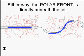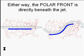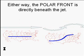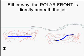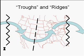But either way, the polar front is going to lie directly beneath the jet. Just to illustrate that, again in both cases I've got a front at the surface, which means the jet stream lies directly above that front. It doesn't matter if that's a cold front or a warm front or a stationary front, so long as it's a polar front.